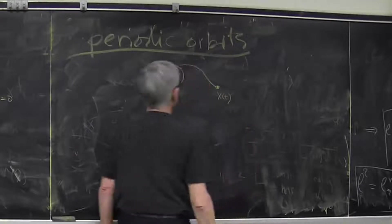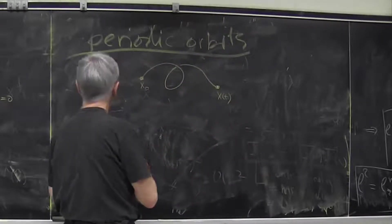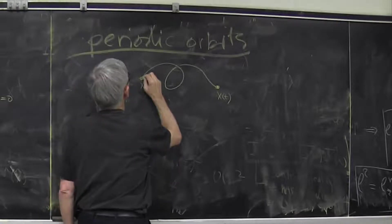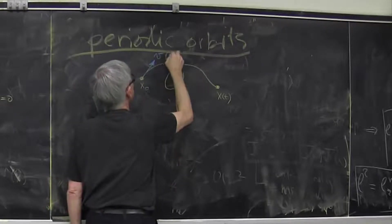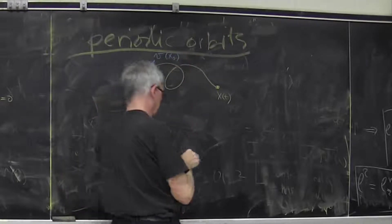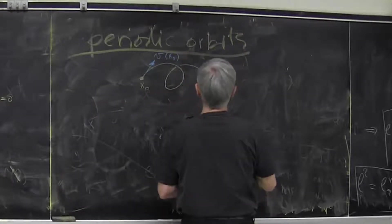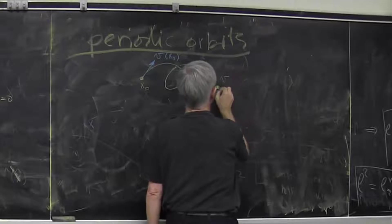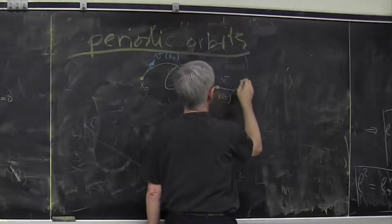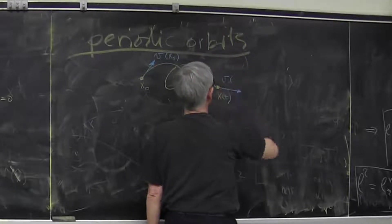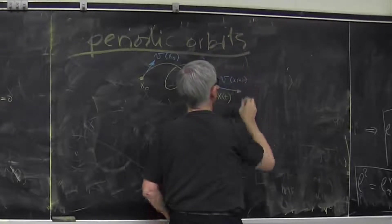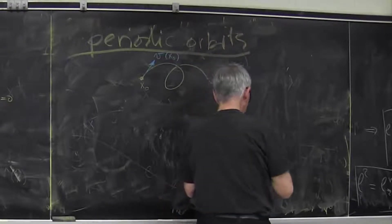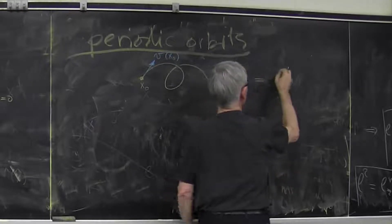I observed that if I look at the velocity vector at x0, then the velocity vector which is tangent to the curve, to the trajectory at the last point at x of t, is actually given by the Jacobian.